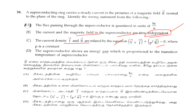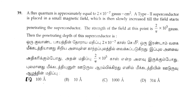The superconductor shows an energy gap which is proportional to the transition temperature of the superconductor — this is correct. So which one is wrong? Option A states the flux passing through the superconductor is quantized in units of Hc/E, but the correct quantization unit is h/2e, not Hc/E. Therefore Option A is the wrong statement and is the answer.